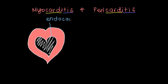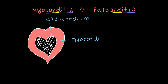We're not going to talk about endocarditis in this video, but that's definitely a significant disorder to think about. The next layer — this meaty red layer on the outside — is the muscle of the heart. This is the myocardium, and this is the part that's affected in myocarditis, as we're going to discuss.